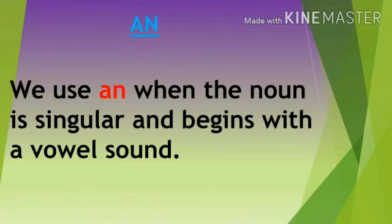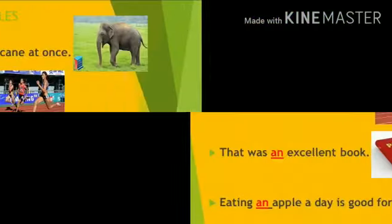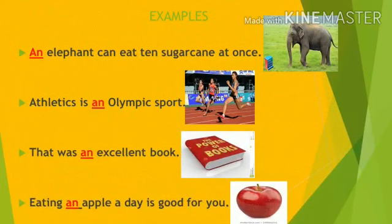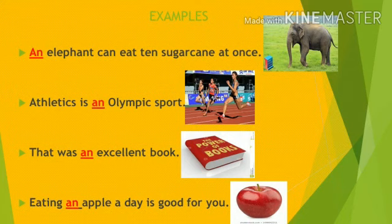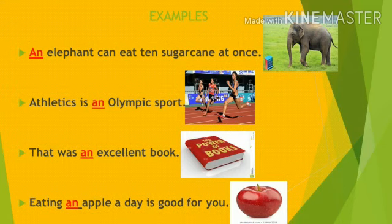AN. We use AN when the noun is singular and begins with a vowel sound. Let us see a few examples: An elephant can eat ten sugar canes at once. Athletics is an Olympic sport. That was an excellent book. Eating an apple a day is good for you. In these examples, we see the nouns elephant, Olympic, excellent, and apple are singular nouns and they sound vowel.